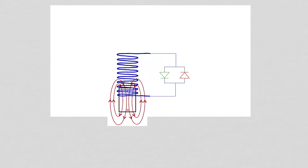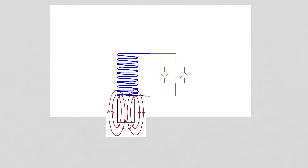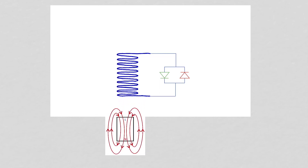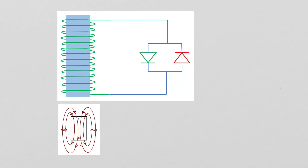As the falling magnet leaves the coil, there is a decrease in the magnetic flux pointing downward inside the coil. Lenz's law tells us there will be an induced current to produce a magnetic flux pointing downward inside the coil. So the induced current flows in the opposite sense, which means the red LED is forward biased and turned on, and the green LED will be reverse biased and turned off.